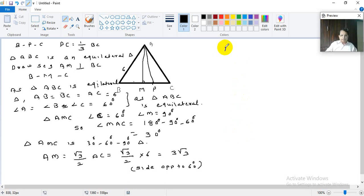And what is MC? MC is one half BC because AM is midpoint. And another reason is this angle MAC being 30 degrees, MC is side opposite to 30 degrees, which is one half the hypotenuse. So MC will be 1 upon 2 into 6. So it is 3. MC is equal to 3.